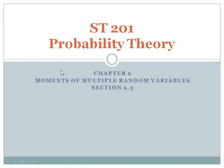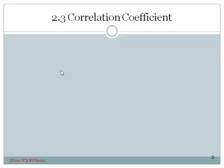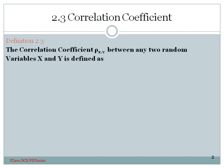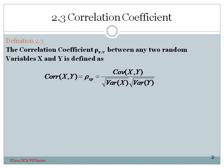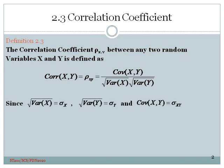Section 2.3: Correlation Coefficient. The correlation coefficient, or rho_xy, between any two random variables x and y is defined as the covariance of x and y divided by the standard deviations of x and y. Since the standard deviation of x is denoted sigma_x, the standard deviation of y as sigma_y, and the covariance of x and y as sigma_xy, we can write rho_xy as sigma_xy divided by sigma_x times sigma_y.